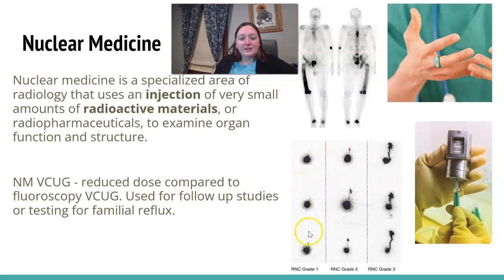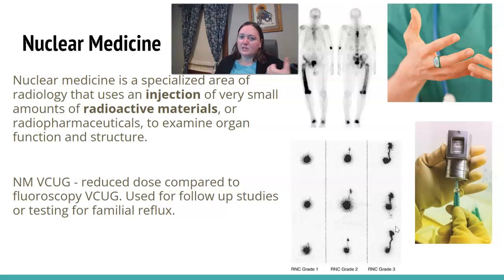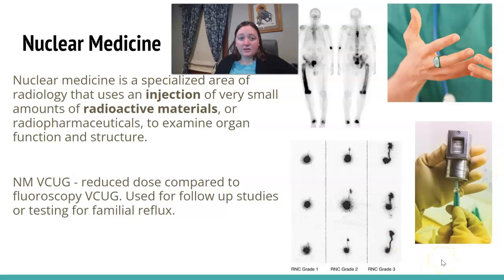Looking at the nuclear medicine image, you can see the bladder and the reflux going up into the kidney. It does not look as detailed as fluoroscopy. But if they're doing a follow-up, or checking a sibling who might also have the condition, they might choose the nuclear medicine scan. They'll cath the child just like we will, inject the material, and do their scans.